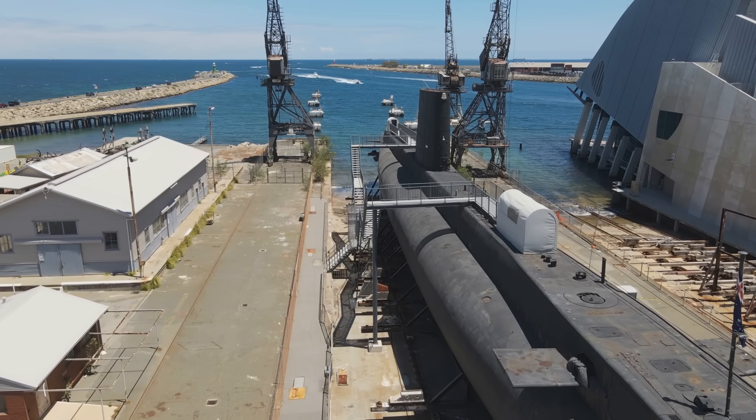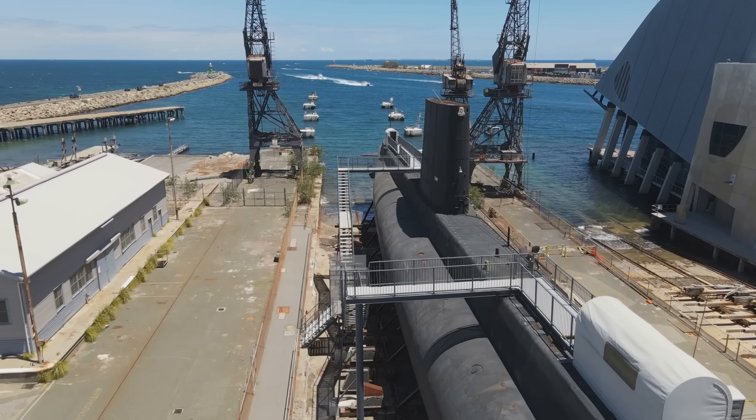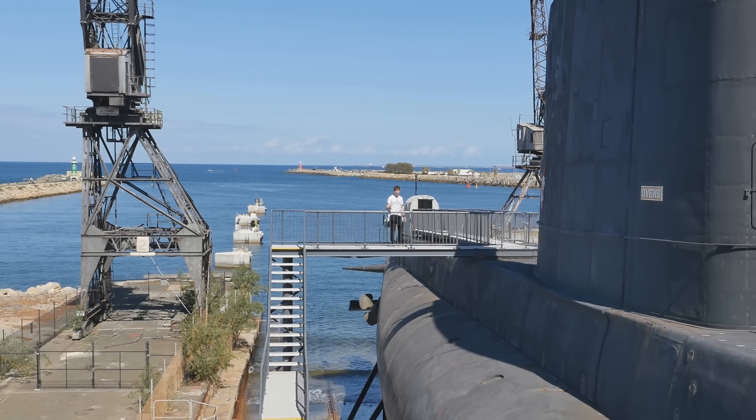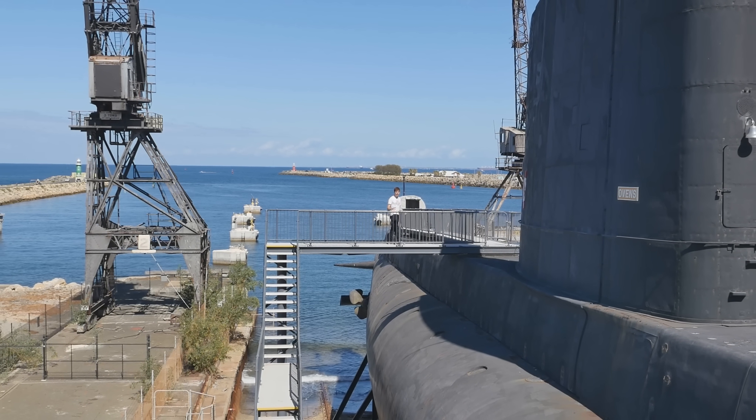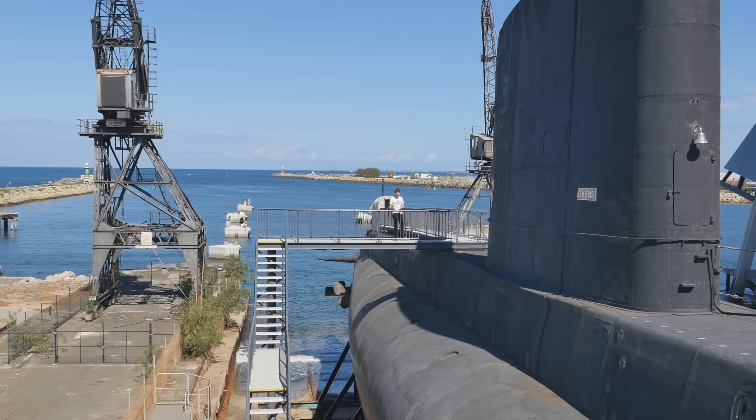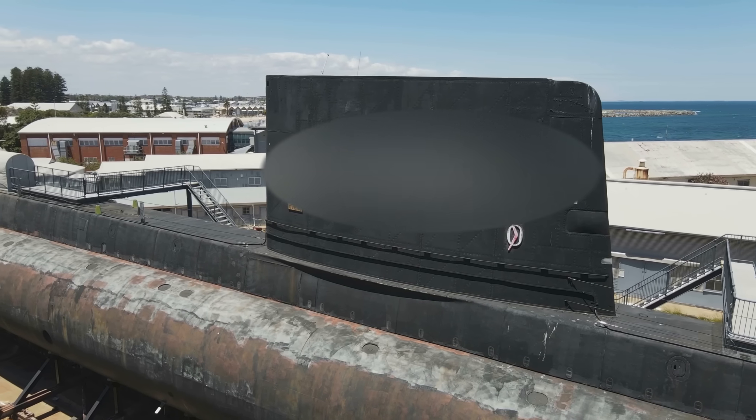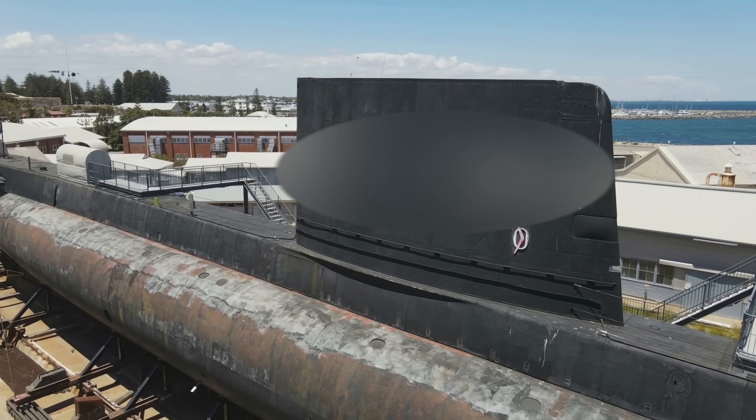Welcome aboard the HMAS Ovens. This is the Oberon-class Cold War-era Aussie submarine which sank the USS Enterprise, delivered special forces to Southeast Asia and stalked the Soviet Navy throughout the world's oceans. None of these missions could have been achieved if not for her unprecedented stealth. So how do you hide one of Australia's most important weapons?